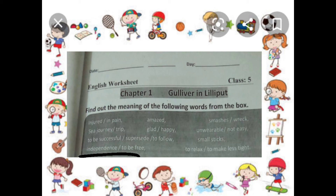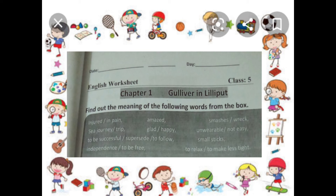Let's review: In pain means تکلیف میں، زخمی ہونا. Amazed means حیران ہونا. Smashes or wreck means ٹوٹ جانا. Sea journey or trip means لمبا سفر، سمندری سفر. Glad or happy means خوش. Unwearable or not easy means پہننے کے قابل نہ ہونا، جس میں آپ اچھا نہ محسوس کریں، easy نہ ہو. To be successful means کامیابی. Small sticks means چھوٹی لکڑی. Independence means to be free, آزادی.